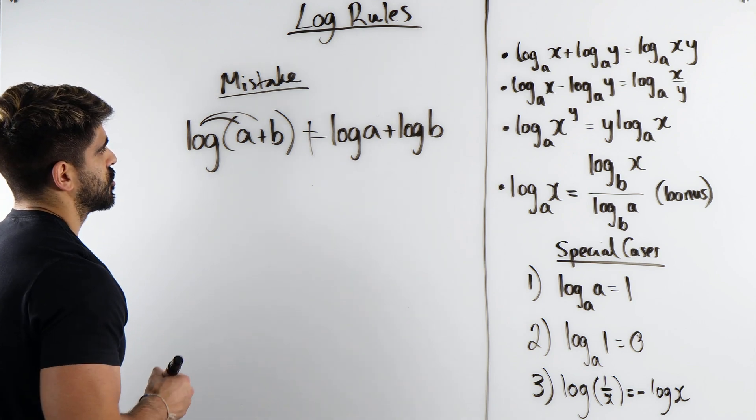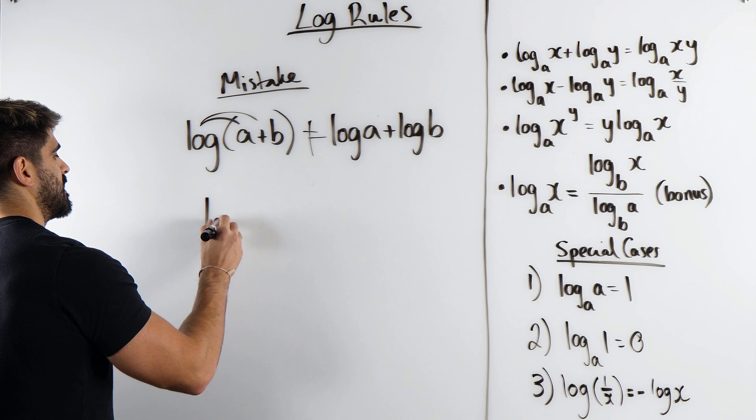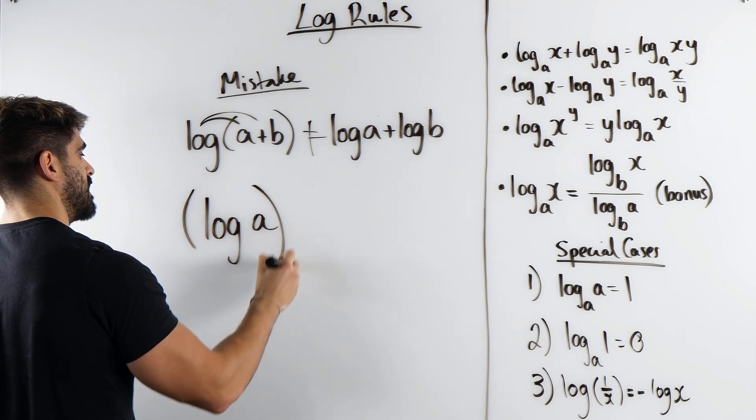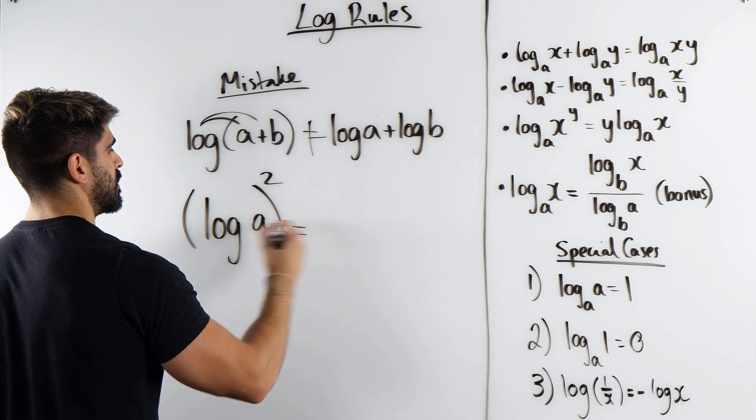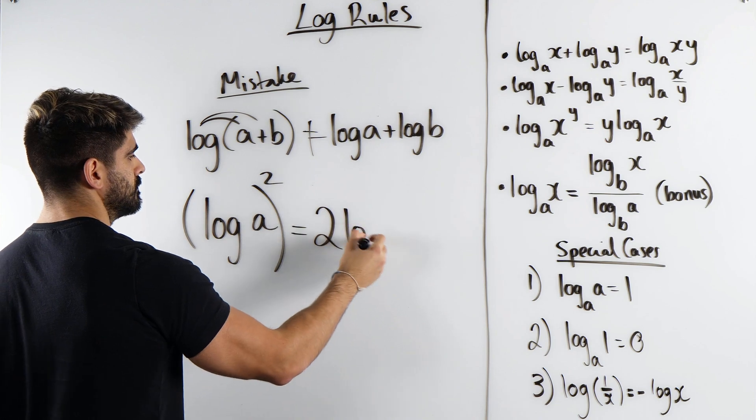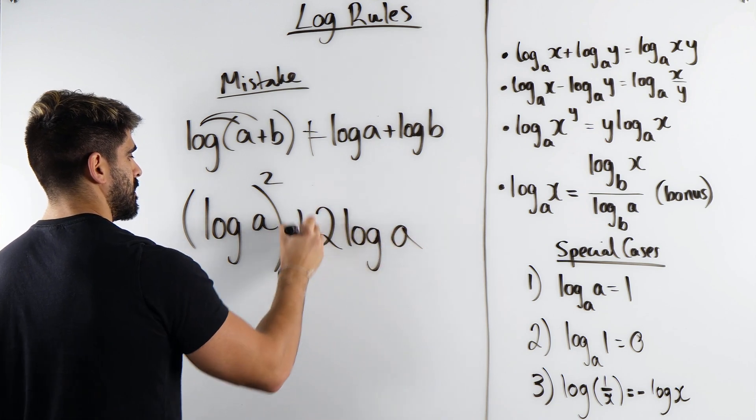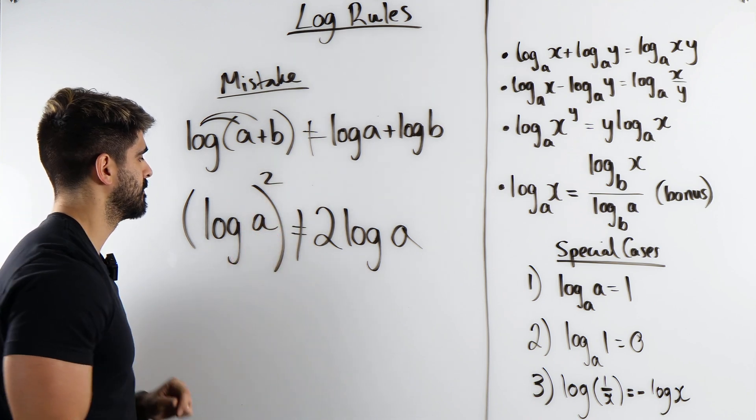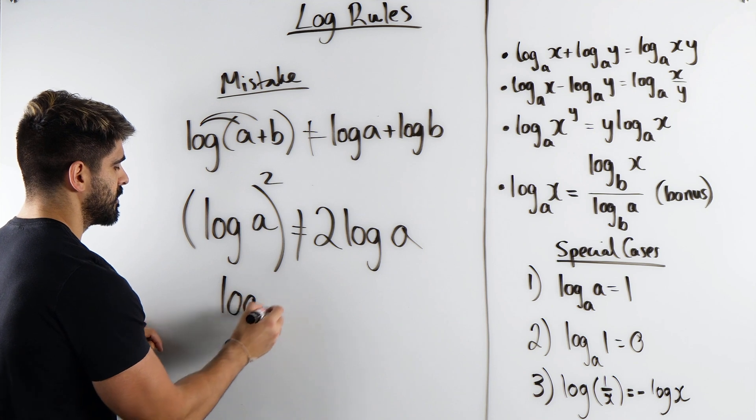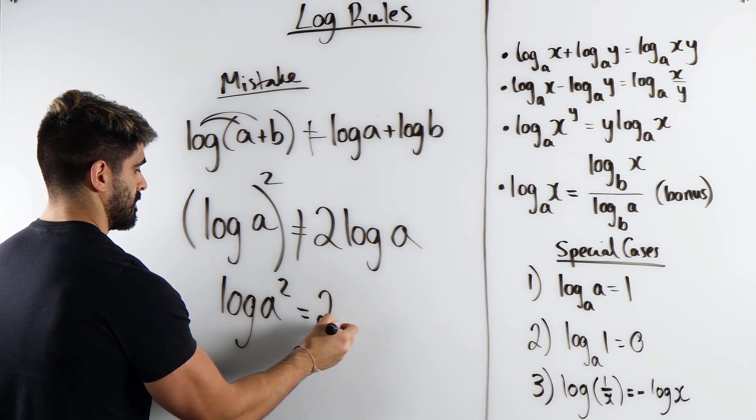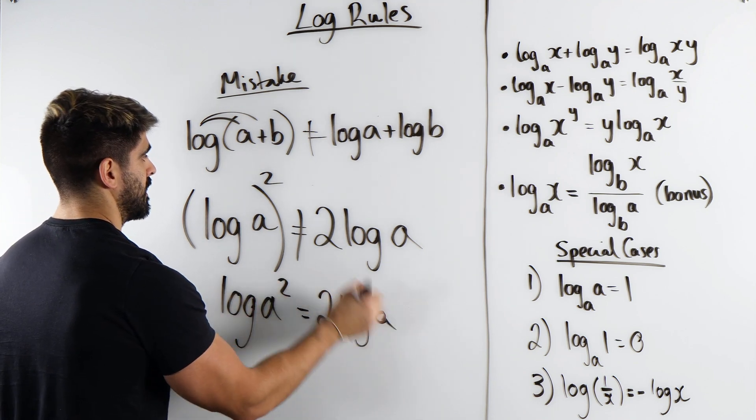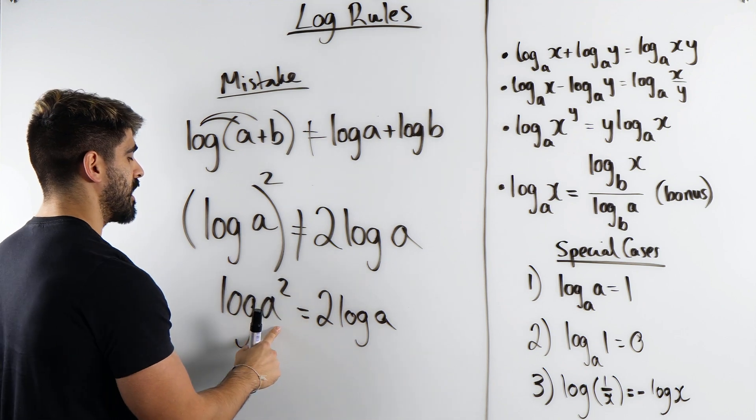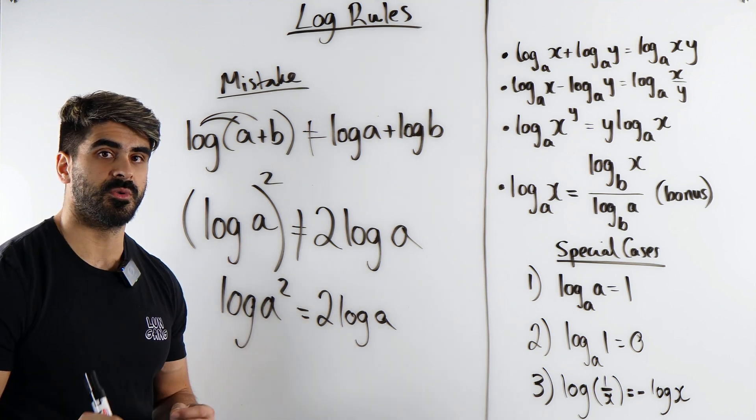The other thing that students make the mistake of is if they see something like this, log base A all squared, they say, ah, I can bring down the 2. Not the case. That squared needs to be on the A. So there is a difference between the two. This is squaring this whole expression. This is squaring what you're logging only.